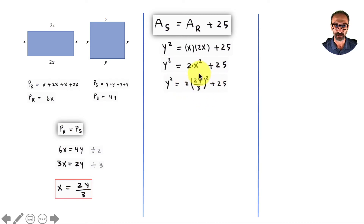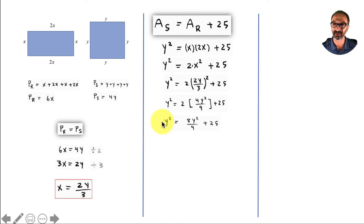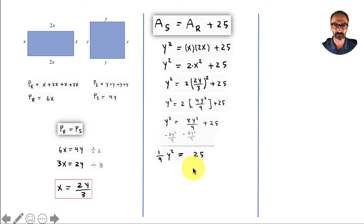Squaring 2y over 3: the 2 will be squared, the y will be squared, and 3 will be squared, giving 4y squared over 9. Applying the 2 — since this 2 is like 2 over 1 — I'll have 8y squared over 9. Subtracting 8y squared over 9 from both sides, the left side becomes 9 over 9 minus 8 over 9 of y squared, which gives 1/9 y squared equals 25.